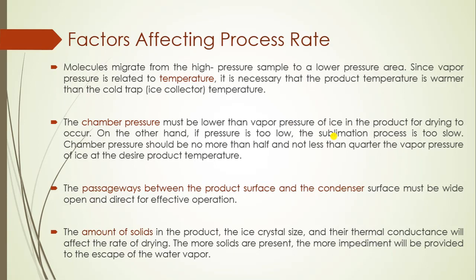For effective sublimation rate, the chamber pressure should be not more than half and not less than a quarter of the vapor pressure of ice at the desired product temperature. The passage gateway between the product surface and condenser must be wide enough, open and direct, for effective sublimation. The amount of solid will also affect the rate of drying, because the amount of solid in the product will define ice crystal size and their thermal conduction. More solids present will provide more barrier for the escape of water vapor.